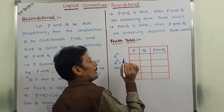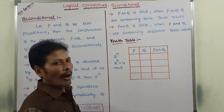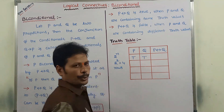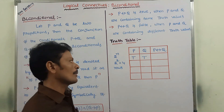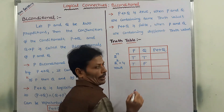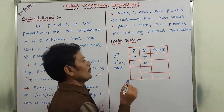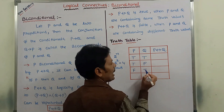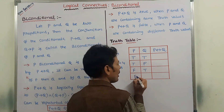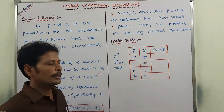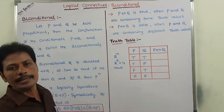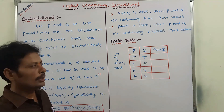The four possible truth value combinations are: P true and Q true; P true and Q false; P false and Q true; and P false and Q false.